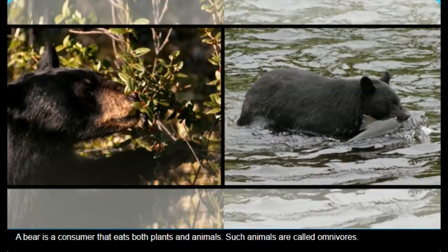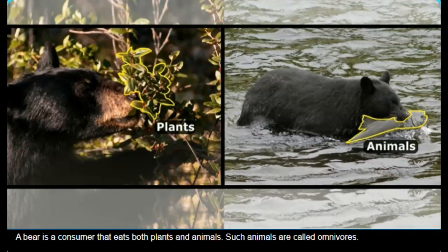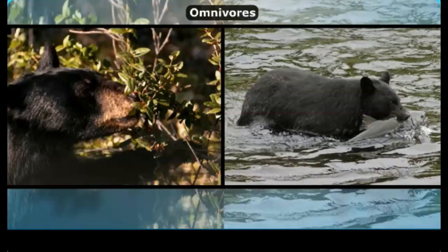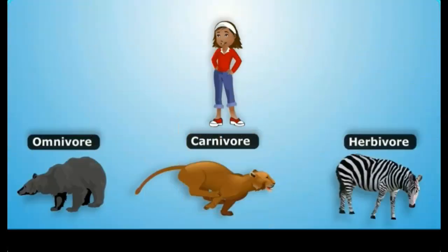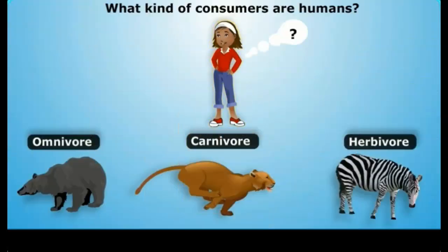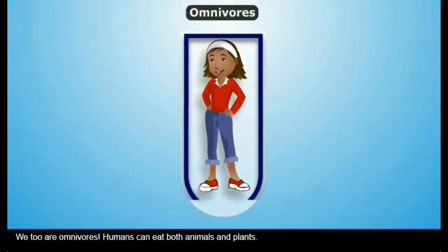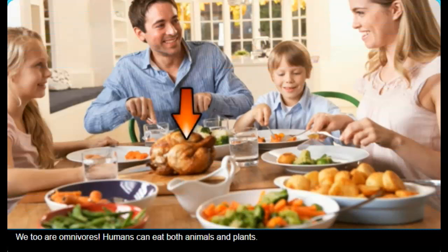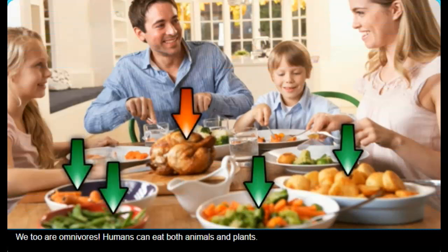A bear is a consumer that eats both plants and animals; such animals are called omnivores. What kind of consumers are humans? We too are omnivores. Humans can eat both animals and plants.